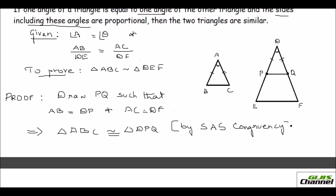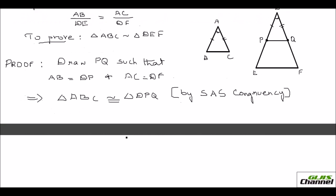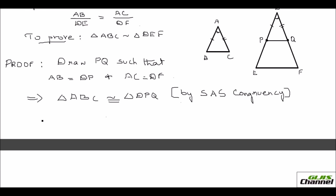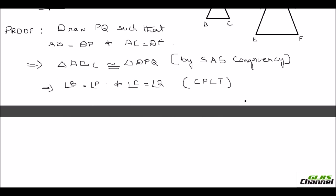By SAS congruency, I can say they are congruent. This implies angle A equals angle D (already given), and also angle B equals angle P and angle C equals angle Q. This is because in two congruent triangles, all corresponding angles are the same. The reason is CPCT — corresponding parts of congruent triangles. Let this be equation 1.